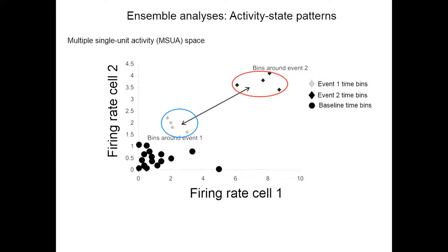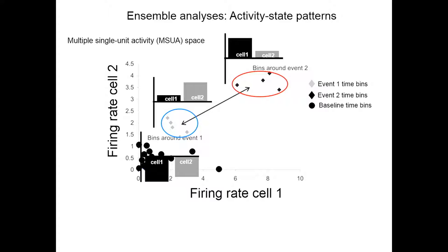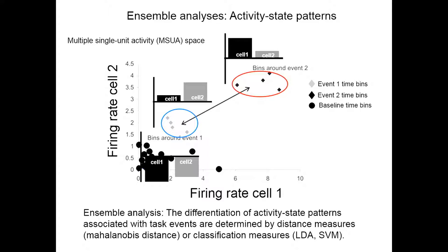We've also been looking at ensemble activity. In the simplest case of two neurons, we plot the firing rate of each neuron where each dot is one time bin. You can look at how these dots cluster in what we call multiple single unit activity space, or MSUA space. We can look at baseline activity or bins around specific events. The idea is that in this two-neuron ensemble, different events are associated with different patterns of activity that are different from baseline. If you have two neurons it's two-dimensional space; with 100 neurons, 100-dimensional space.